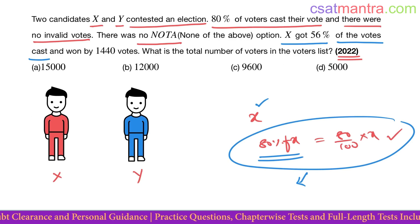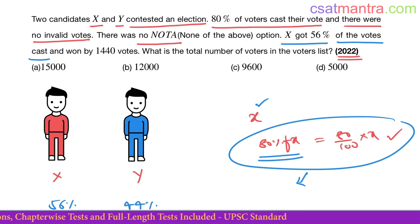Out of them, 56 percent cast vote for X. Remaining would be 100 minus 56, that is 44 percent. So 44 percent cast vote for Y, 56 percent cast vote for X.